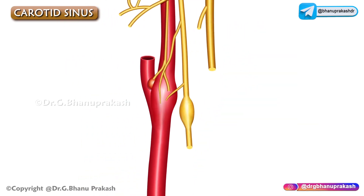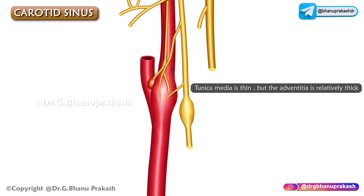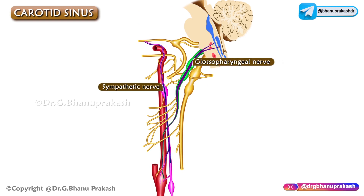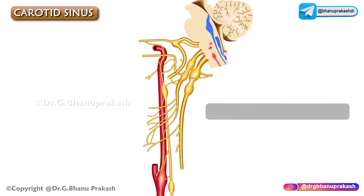In this particular region where the carotid sinus is located, the tunica media is extremely thin. But remember that the tunica adventitia is relatively thick compared to that of other arteries present in the body, and it receives a rich innervation especially from glossopharyngeal and sympathetic nerves.